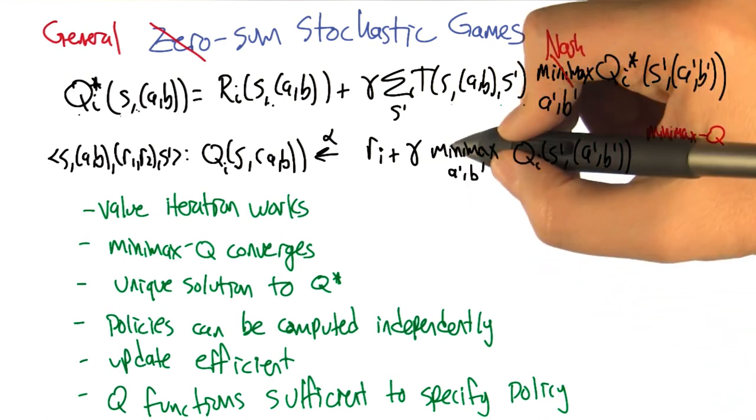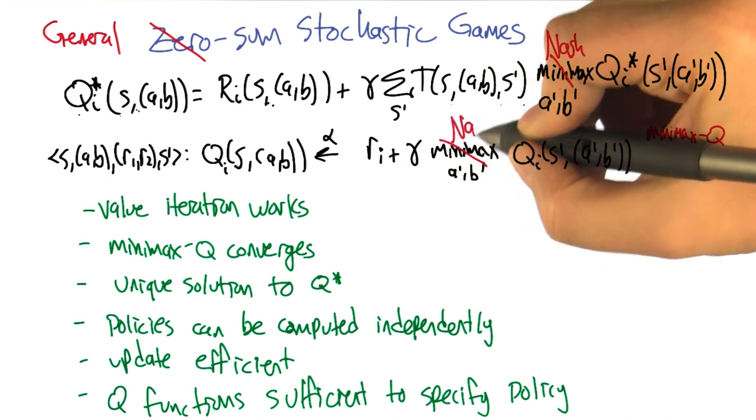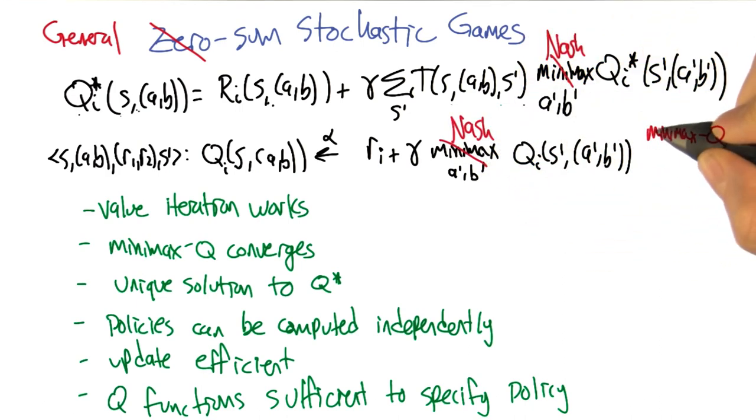So we can do the same thing in the Q learning setting, substitute in a Nash equilibrium, and we can call that algorithm Nash Q, which appears in the literature. Nice. Oh, minimax Q, by the way, is something that I wrote about. Nash Q is a different algorithm. So it's not as cool is what you're saying? Well, let's see how it goes.